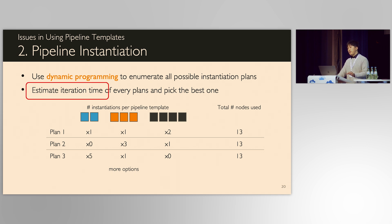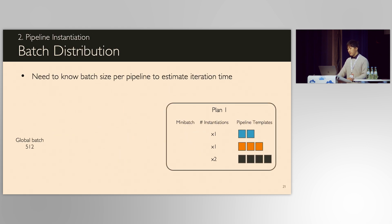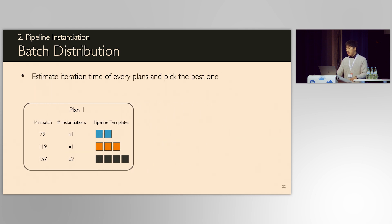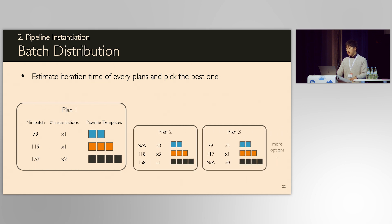But here, estimating iteration time requires to know batch size per pipeline. At this moment, we only know the global batch size, but do not know how it should be distributed to the pipelines. We formulated it as an integer optimization problem. The solver finds mini-batch for each pipeline where the sum of batch matches to the given global batch, while minimizing overall iteration time of this plan. After calculating mini-batch for pipelines for every plan, we can estimate iteration time and can pick the fastest one.